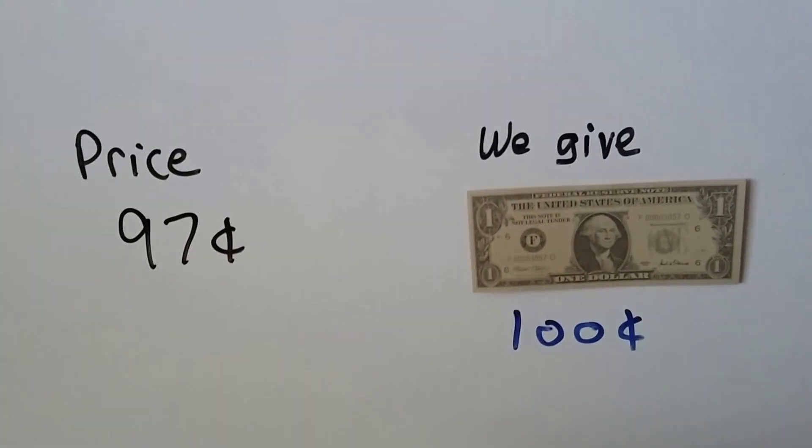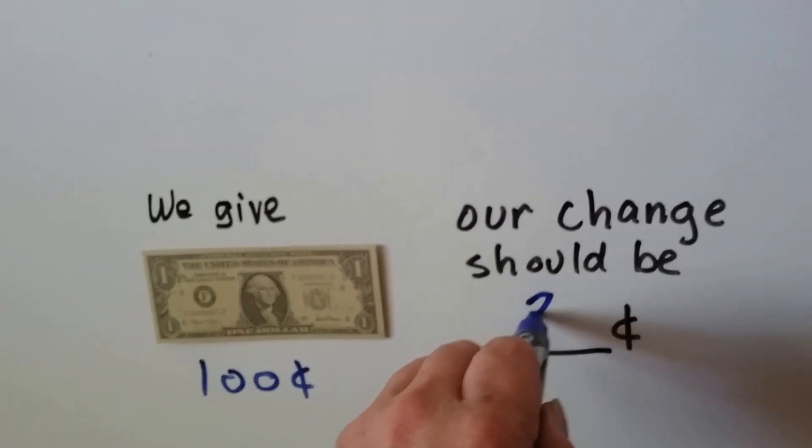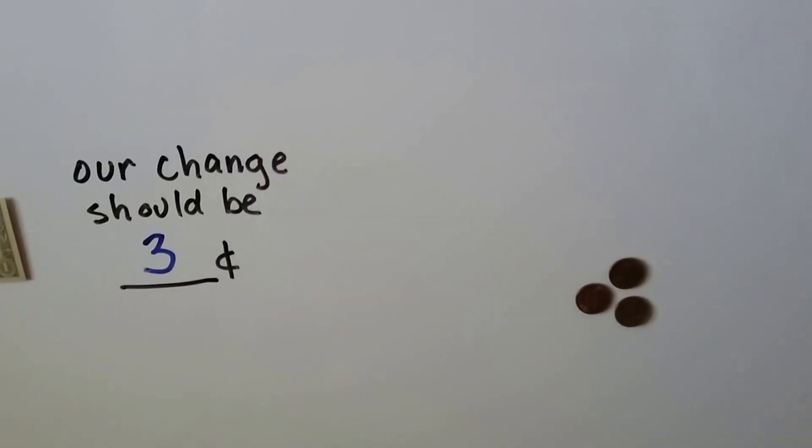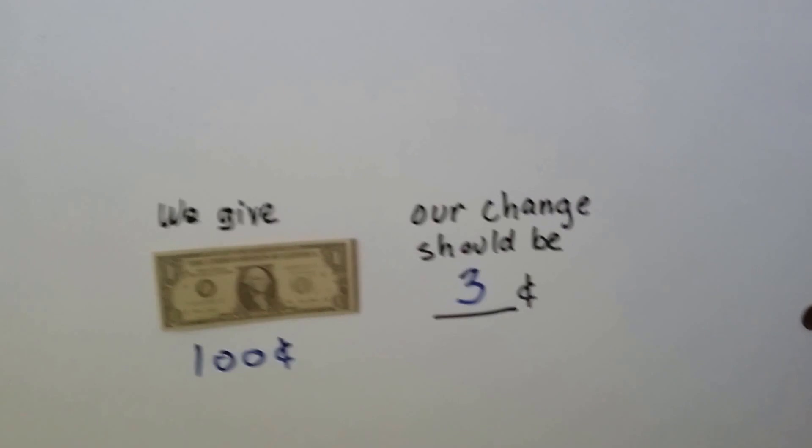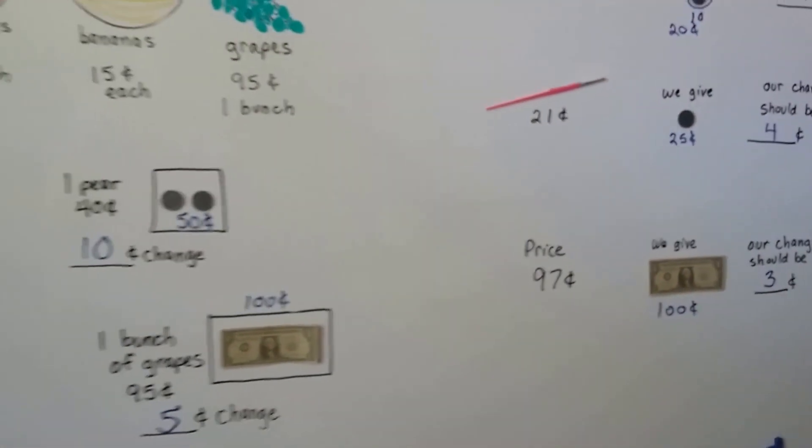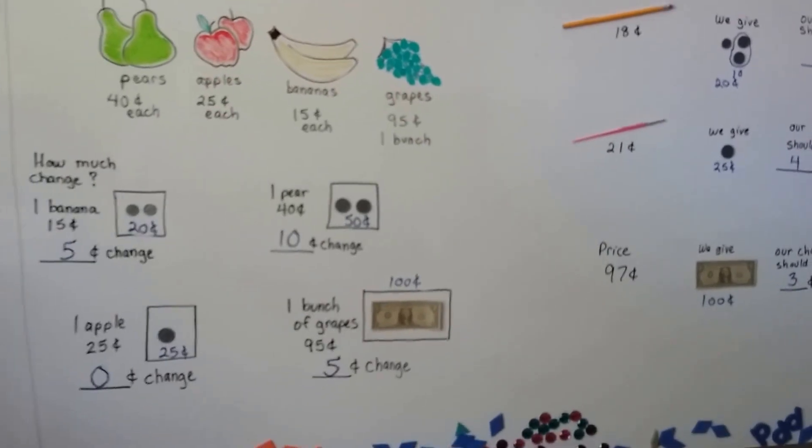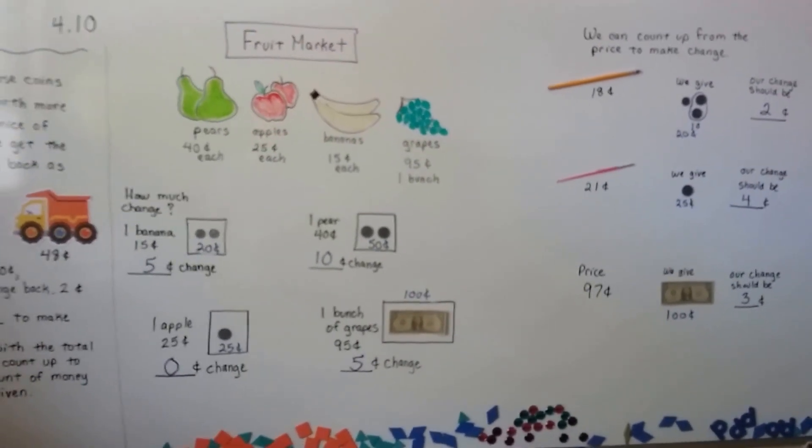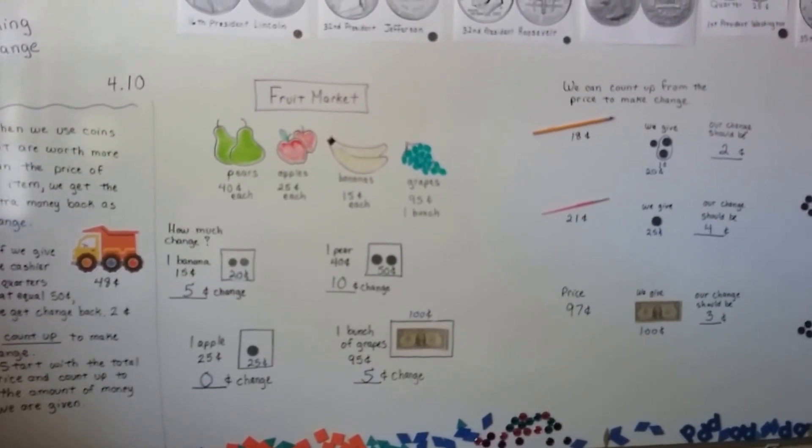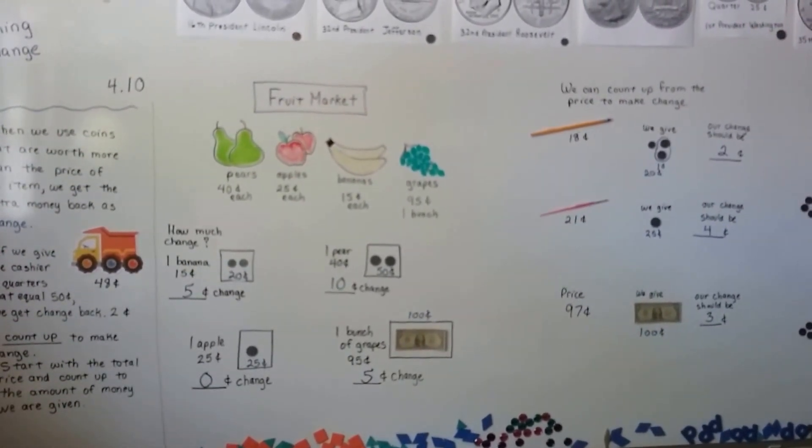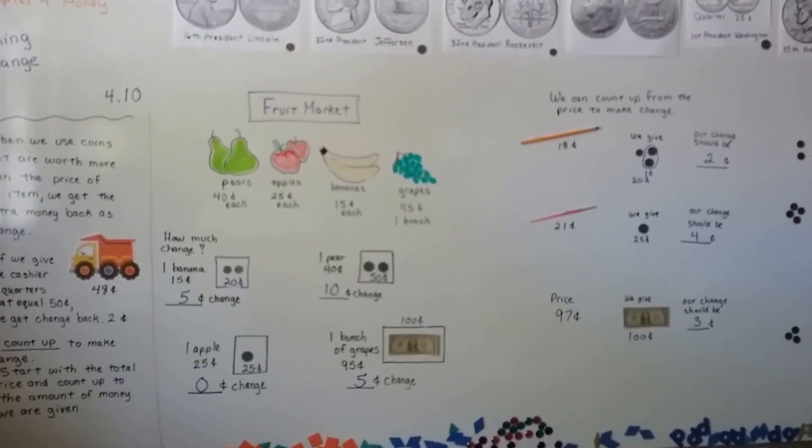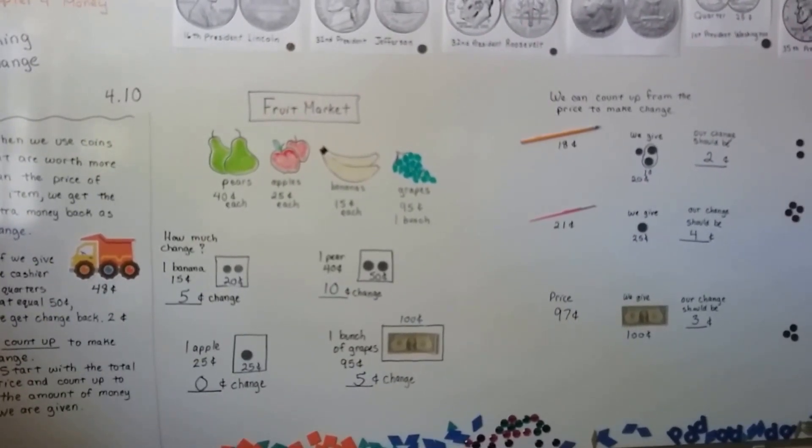Okay, so the trick to counting to make change is you start with the price, the total amount, and you count up to the amount of money that was given. Okay, we're going to talk about money some more and I'll see you in the next video. Bye.